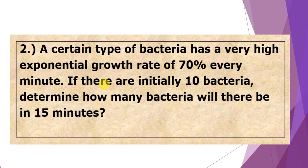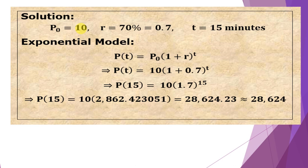Moving on to number 2. A certain type of bacteria has a very high exponential growth rate of 70% every minute. If there are initially 10 bacteria, then determine how many bacteria will there be in 15 minutes. So our initial amount is 10 bacteria, P₀ = 10, and the rate is 70%, converted to decimal, we have 0.7.